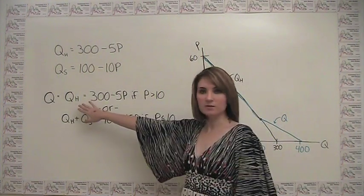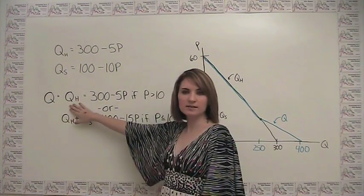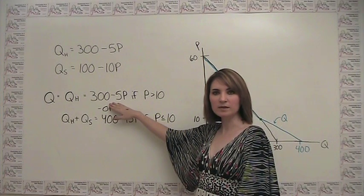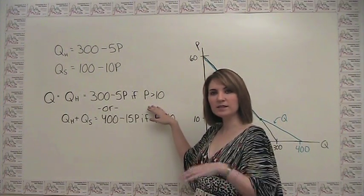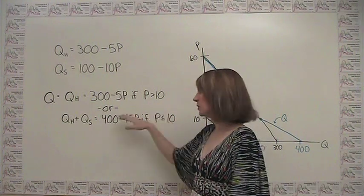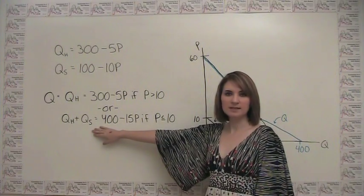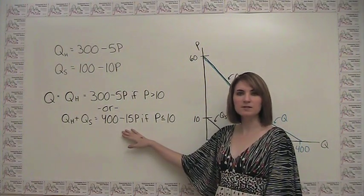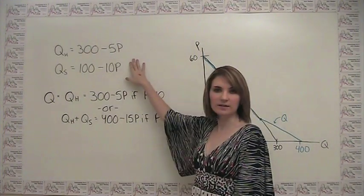Here we can write this as follows. We can say that our total market quantity is just equal to the quantity demanded by the happy people, which is 300 minus 5p, if the price is greater than 10. And then once the price falls below 10, we have both groups purchasing. So we say for prices below 10, we have both the happy people and the sad people buying, and we get a demand of 400 minus 15p, which is what we had when we added the two demand curves together before.